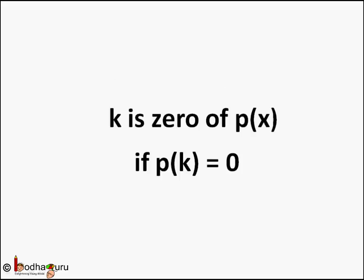Hello friends, as we have seen in our earlier videos, a real number k is zero of a polynomial p(x) if the value of that polynomial for x equals k comes out to be 0, that is p(k) equals 0.